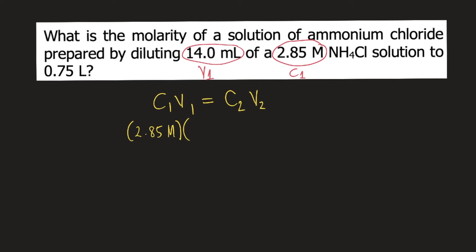For V1, let's use 14 mL. C2 is the final concentration, which is unknown in this problem, so let's just put C2. And V2 is the final volume - we have 0.75 liters in the problem, so this is V2.